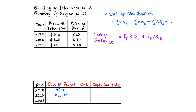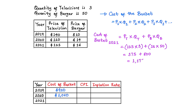For 2021, the cost of the basket equals the price of television (125 dollars) times the fixed quantity (3 units), plus the price of burger (16 dollars) times the fixed quantity (50 units). So we have (125 × 3) + (16 × 50) = 375 + 800 = 1175 dollars. The cost of the basket in 2021 is 1175 dollars.